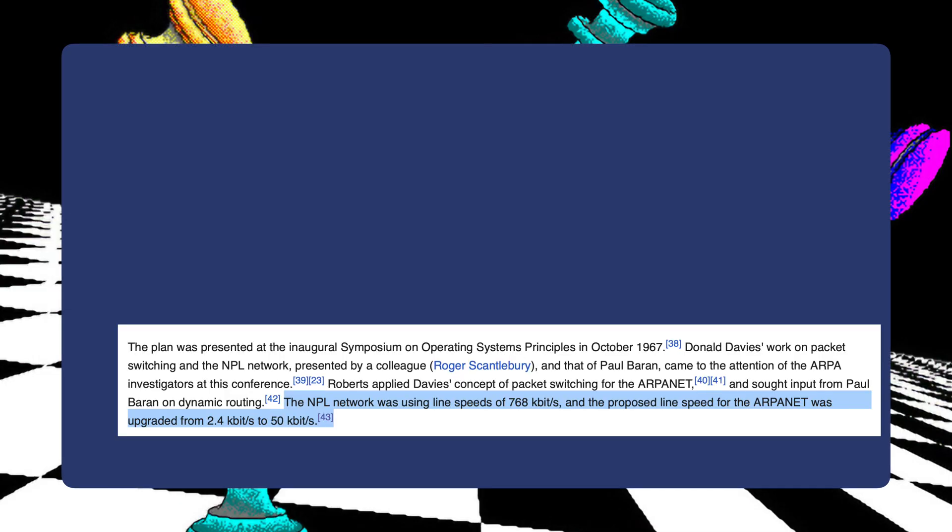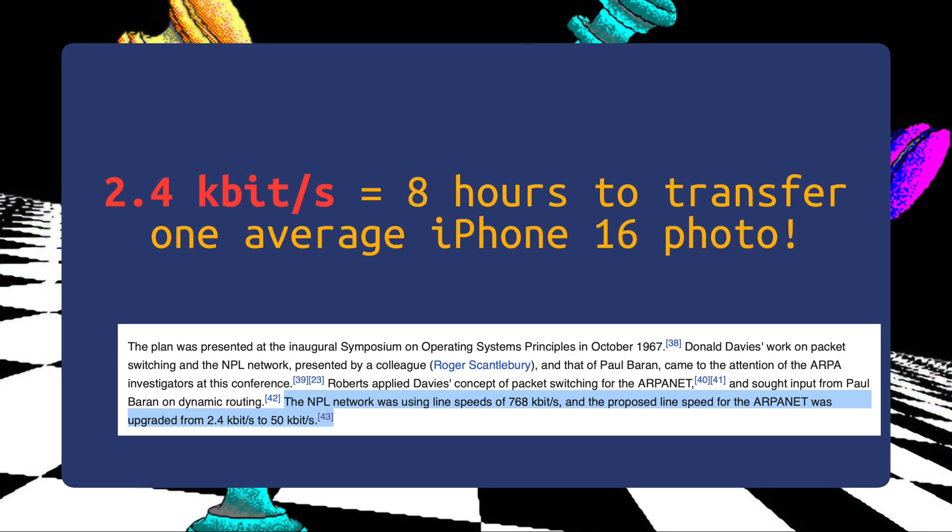Their early focus was on things like remote login to powerful computers and file transfers between scientists. A question was proposed: what if we wanted to make a call — send your voice over these networks? This was difficult in the early days not just because the networks were slow, but because a voice application built on these networks didn't know how slow they were at any given time. They needed this information to decide how and if they could send and receive voice at acceptable quality. And this is something you don't get with the Internet Protocol — it's connectionless.